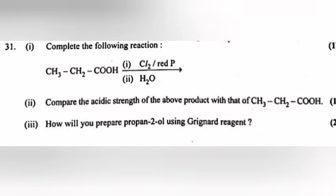Question 31, Part 1: Complete the following reaction. Part 2: Compare the acidic strength of the above product with that of CH3CH2COOH. Part 3: How will you prepare propan-2-ol using Grignard reagent?